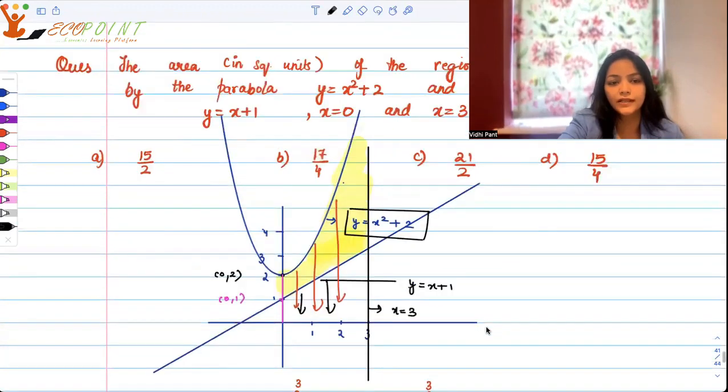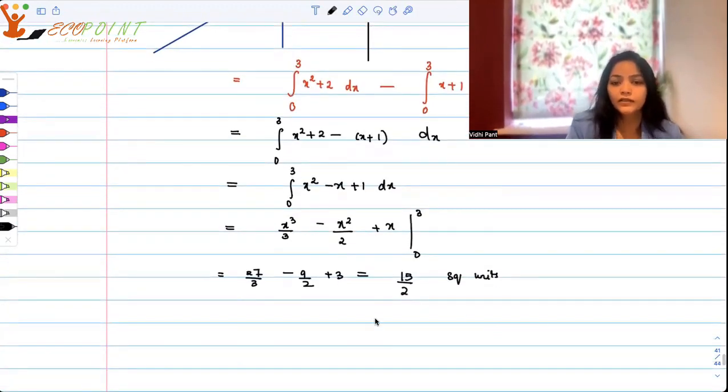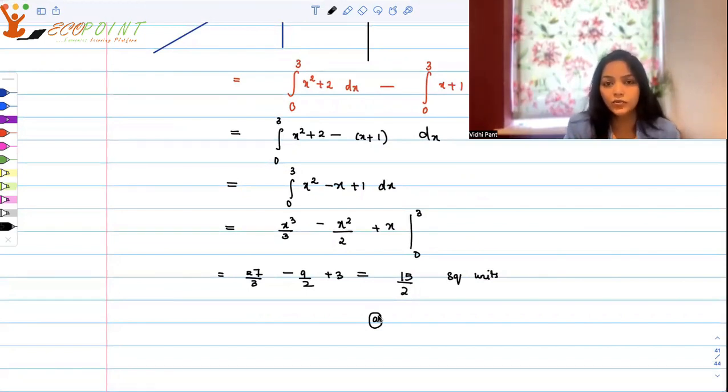So the correct option is option A, 15 by 2. And that's how you would find out area under certain situations using integration. Thank you very much.